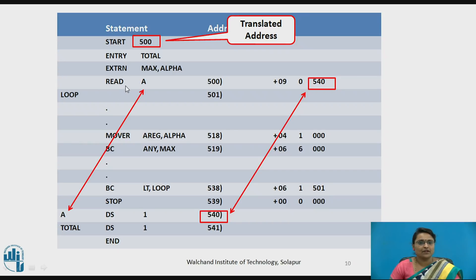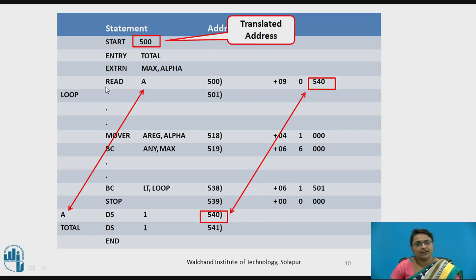For example, the label or symbol 'a' is defined here — it declares a storage of one word. The address at that location is 540, so symbol 'a' is declared at location 540. When we use 'READ A', the instruction READ has opcode 9, and the operand 'a' refers to the translated address 540. So 540 is the translated address used in this instruction.